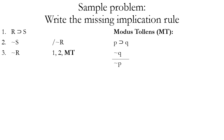The answer is MT or modus tollens. The form fits: one premise is a conditional, the other is the negation of the consequent — exactly matching modus tollens — and the conclusion is the negation of the antecedent. Keep those generic forms in mind when applying inference rules. You don't rewrite the whole thing on the right; you just write the new conclusion line and cite the rule.